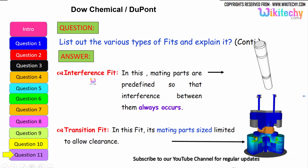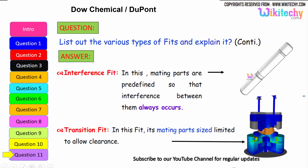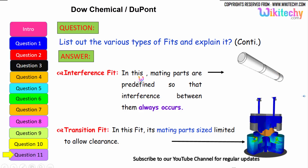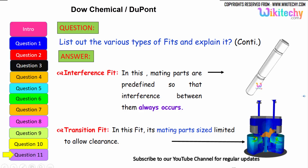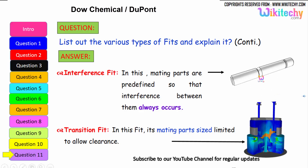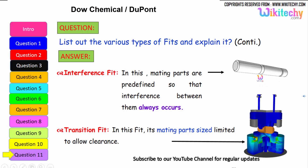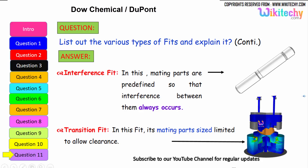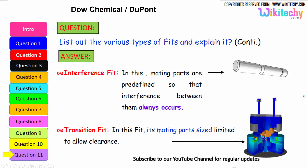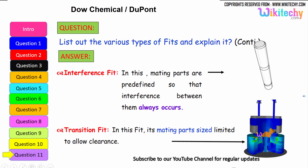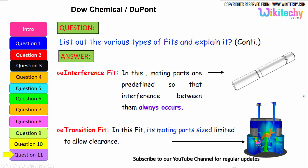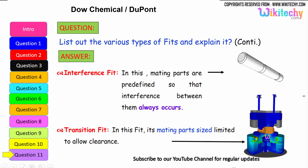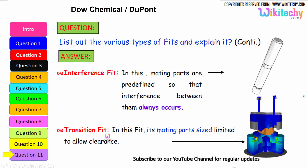For interference fit, the mating parts are predefined so that interference between them always occurs. For transition fit, the mating parts are sized to allow only a low clearance — exact fitting is not required. These are the three types of fits: clearance, interference, and transition.